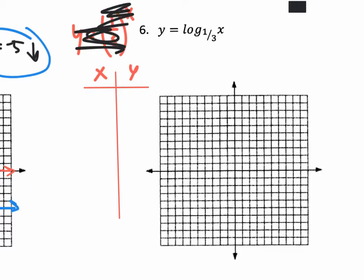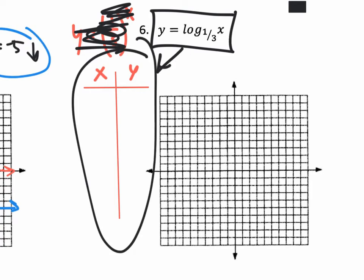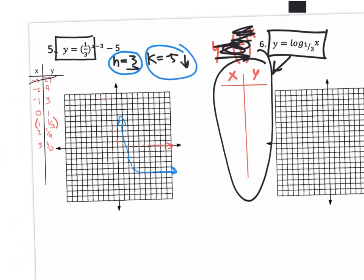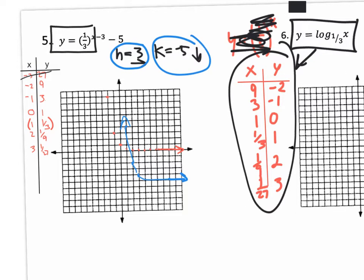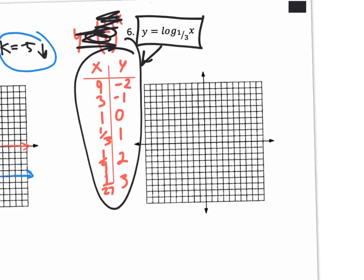Once you cover up the log and come up with the exponential coordinates — which are the same ones we already found — all you have to do is switch the X and Y values to get the coordinates of the actual logarithm. So instead of negative two and nine, we put nine and negative two. Instead of negative one and three, it's three and negative one. Instead of zero and one, it's one and zero, and so on. Switching them gives us the actual coordinates of the logarithmic function.